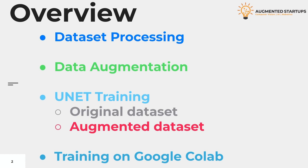We know that we need good hardware to train a deep neural network, especially a GPU. Hence, in the final step, we will learn how to train the U-Net architecture using Google Colab, as not everyone has access to good hardware, so Google Colab would be a good option.